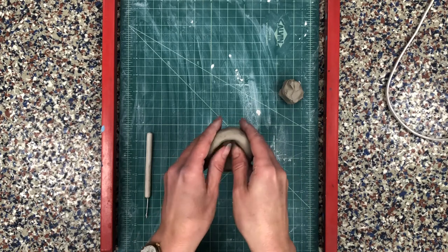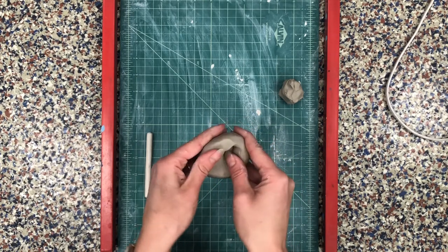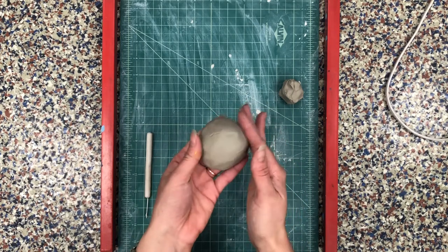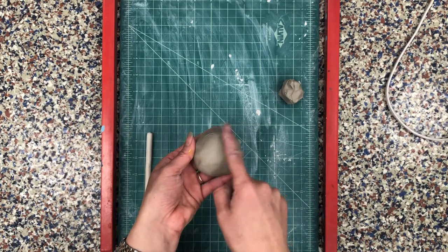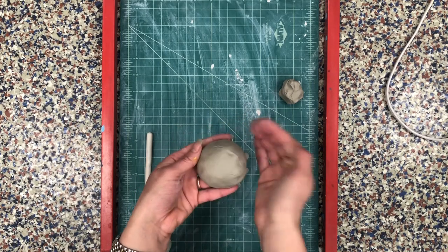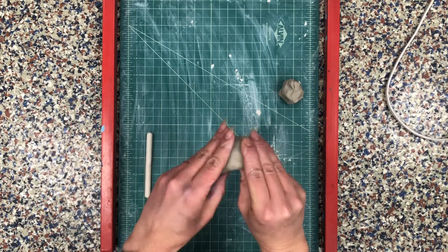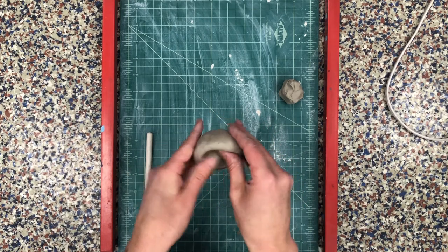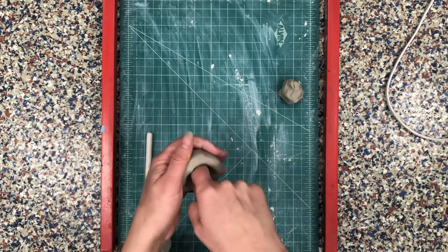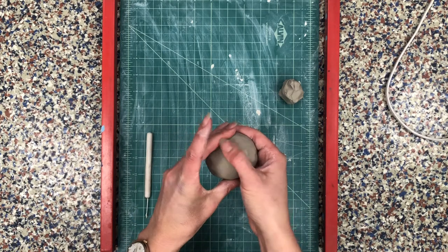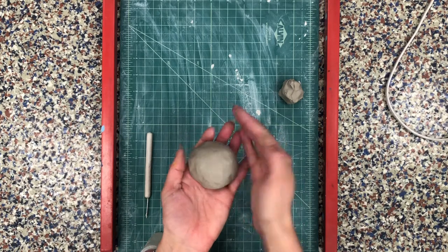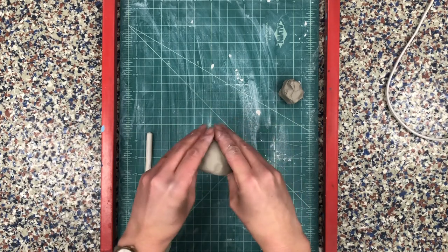We don't need this pinch pot to be super deep. We don't need that hole to be very big because really what we're concerned about is the outside of the pot. This is going to create the body of our bug. So I'm just going to keep on shaping it, working underneath and on top until my body shape is a nice round 3D shape that I like.